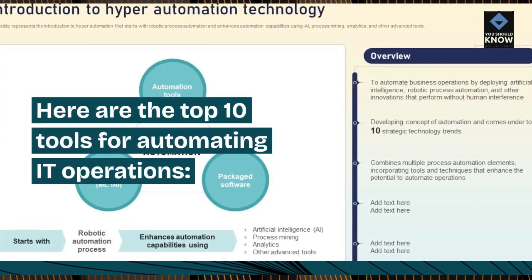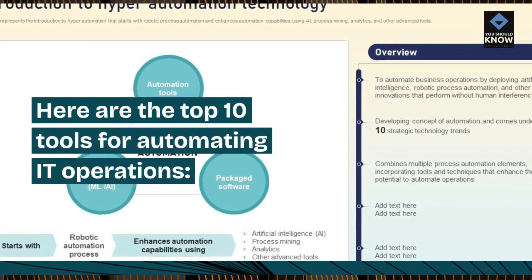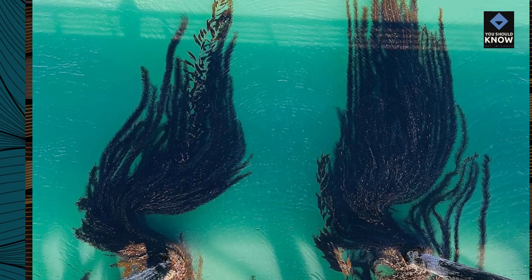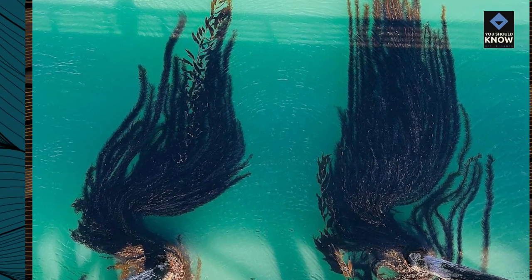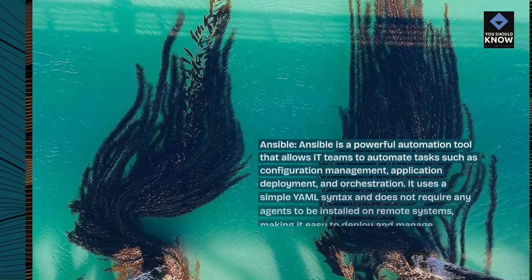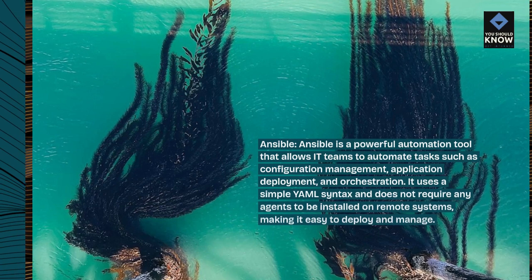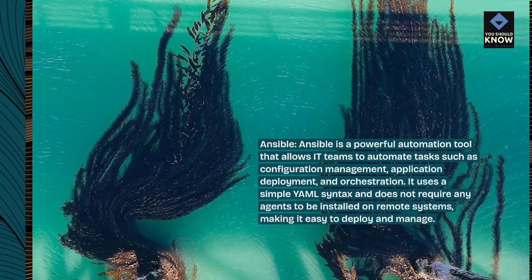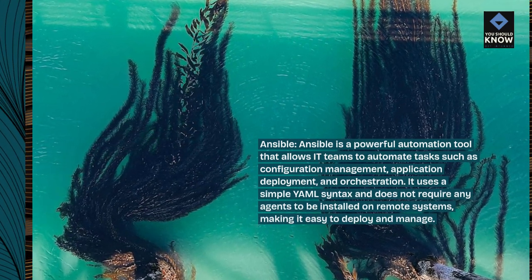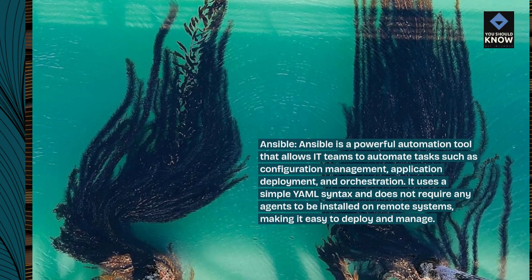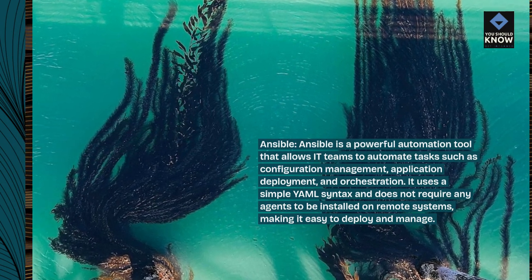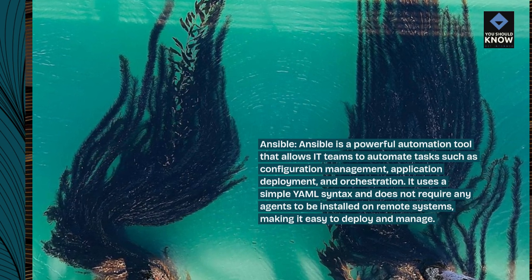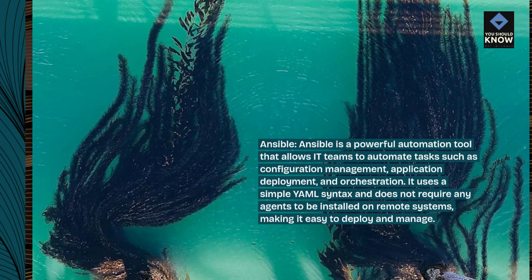Here are the top 10 tools for automating IT operations. Ansible is a powerful automation tool that allows IT teams to automate tasks such as configuration management, application deployment, and orchestration. It uses a simple YAML syntax and does not require any agents to be installed on remote systems, making it easy to deploy and manage.